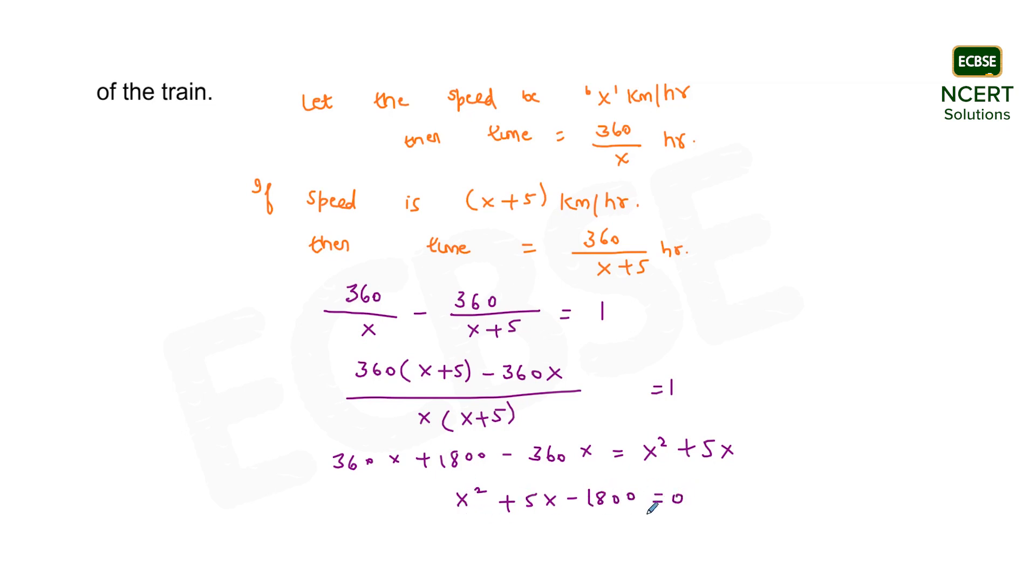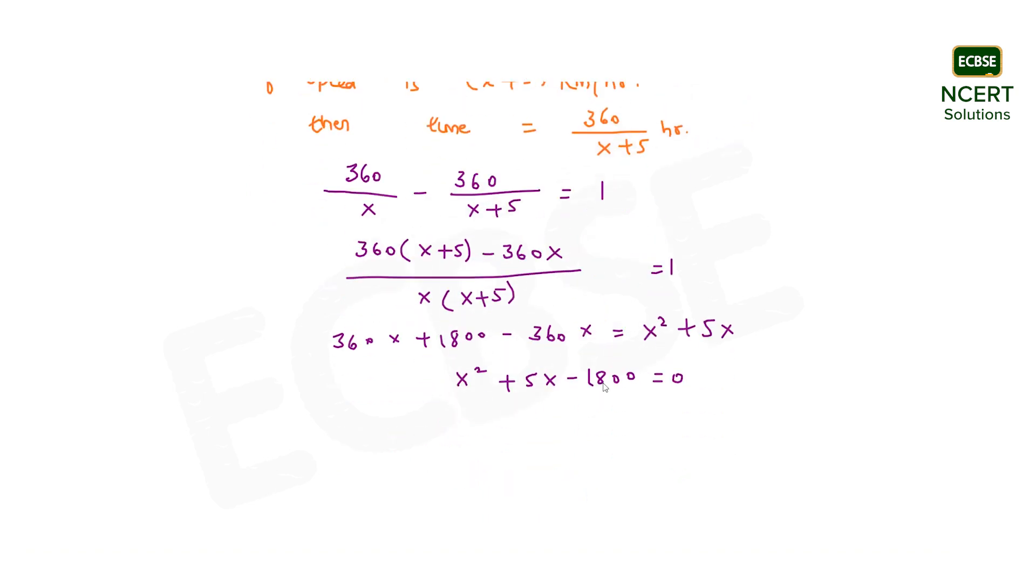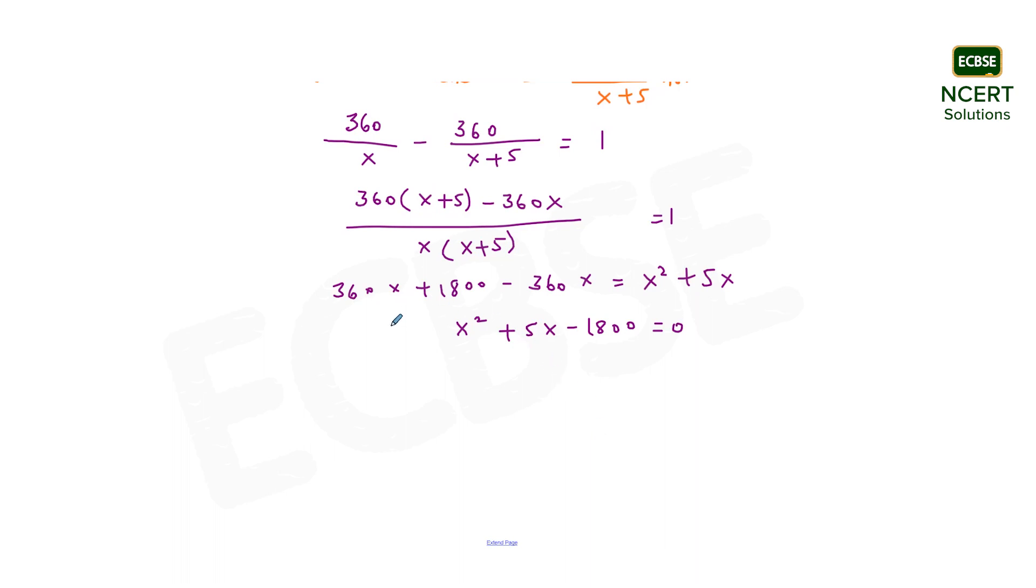Now the next step will be to solve this quadratic equation. As we know, the quadratic equation can be solved using the quadratic formula. So comparing this quadratic equation with the standard one, the value for A will be 1, B will be equal to 5, that is the coefficient of x, and C which is the constant term is minus 1800.